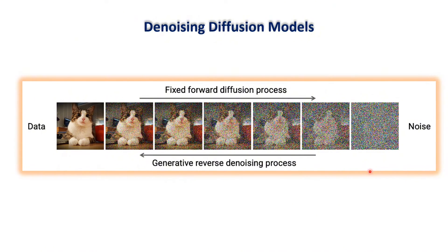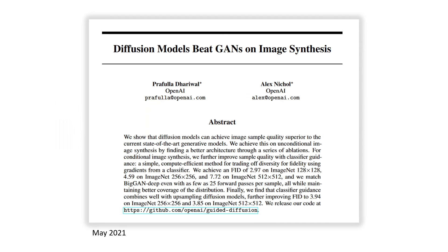And after training, we can simply generate a random noise and use the trained denoising model to generate a new image through a reverse denoising process. And in this paper that was published in May 2021 by OpenAI, they showed that diffusion models can beat GANs on image synthesis.